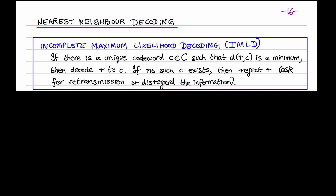IMLD is the following strategy. If there is a unique codeword C such that the distance between R and C is a minimum, then the channel decoder corrects R to C. If no such codeword C exists, then the channel decoder reports that errors have occurred but correction is not possible. In this event, the application might ask for a retransmission of that codeword, or it might disregard that information.